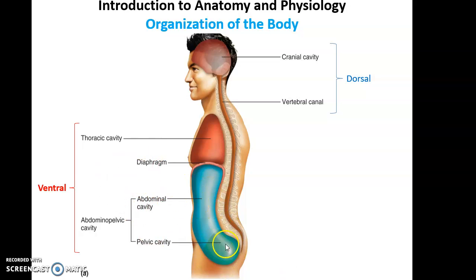Then we have the pelvic cavity. Found primarily there is the very end of the large intestine, including the rectum, the urinary bladder, and also the ovaries, uterus, and vagina for people who have those structures.